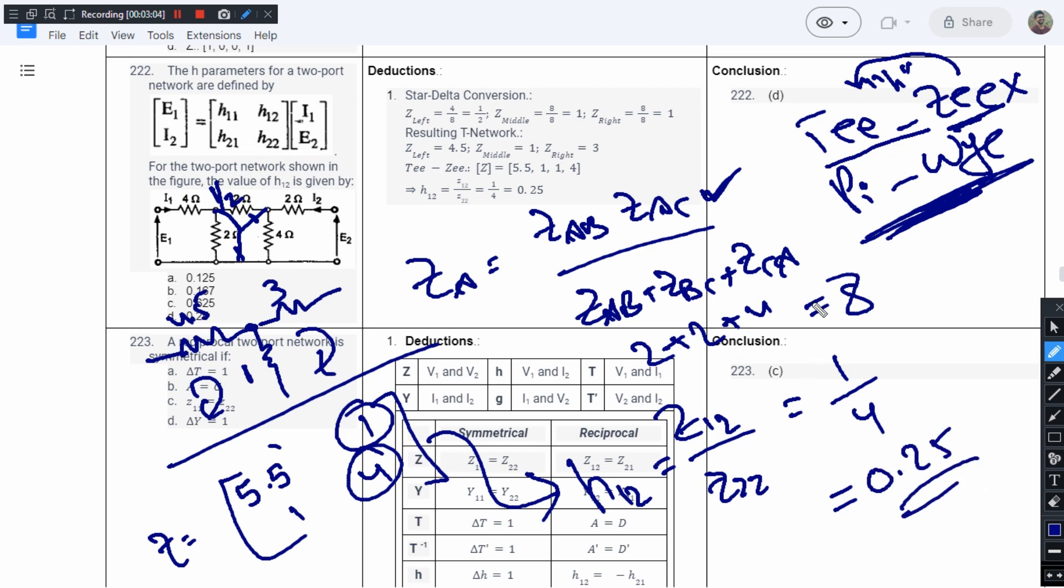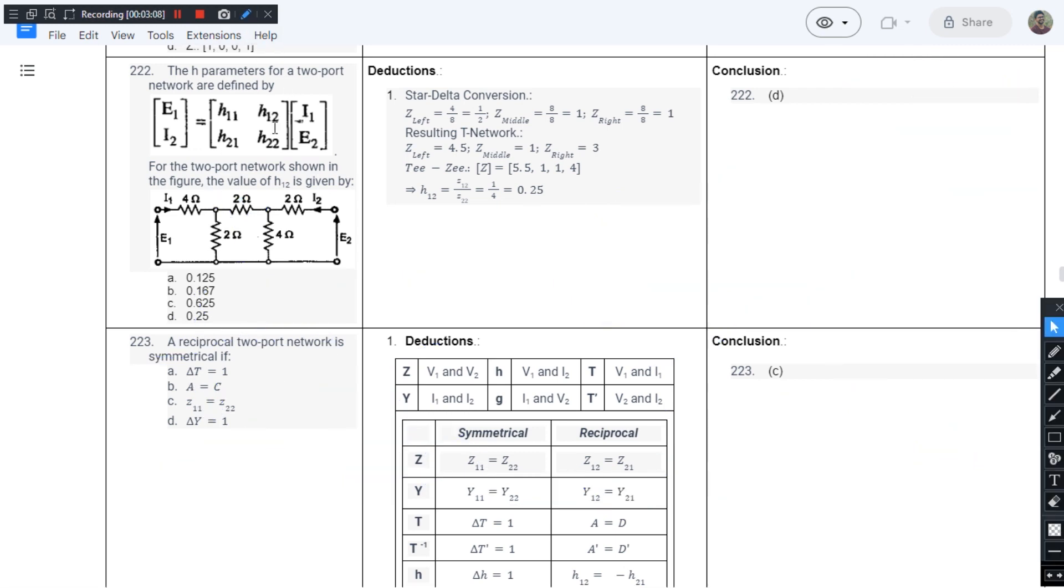So from the options, we have 0.25 in option D. So we say that question number 222, the answer is in option D.